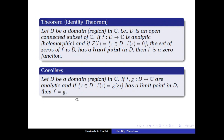This corollary is proved easily. We take h = f − g. Then h is analytic, and the set of zeros of h is precisely the set {z in D : f(z) = g(z)}. This set has a limit point in D, so by the Identity Theorem the function h is identically zero, meaning f = g.